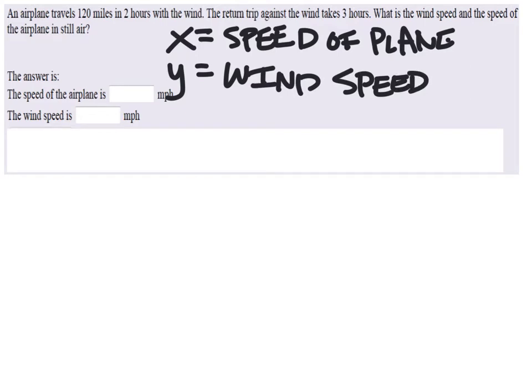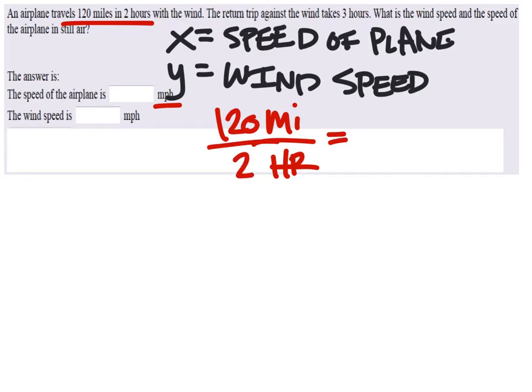They didn't give us any of the speeds directly, but we can still find the speeds. This first one is 120 miles in two hours. Speed is always in miles per hour. So I have 120 miles divided by two hours, and this is with the wind. That gives me 60 miles per hour.